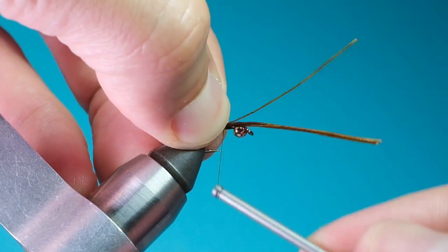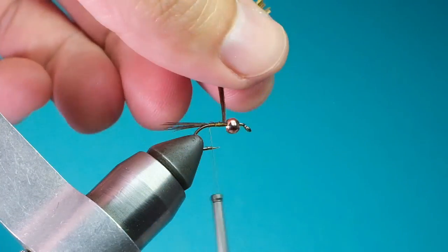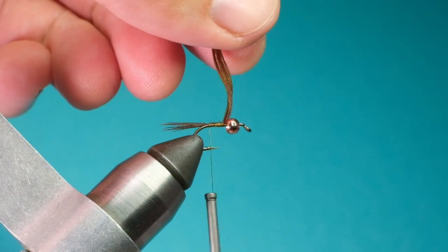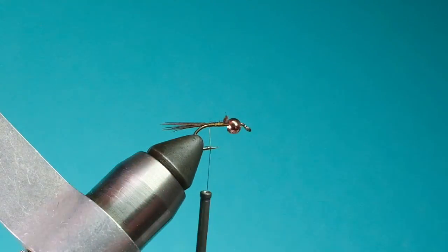Tie the fibers in just above the point of the hook with the tips facing out to form the tail. Bring your thread back to the bend of the hook and cut off the excess Pheasant Tail.